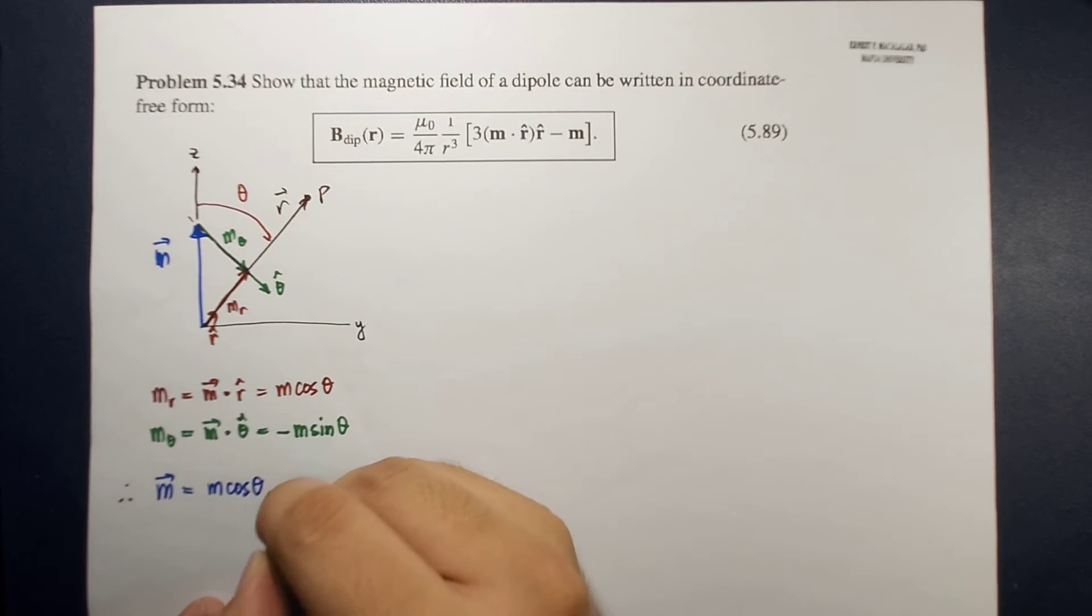So this is m_r, r hat minus m sine theta theta hat. Okay, so let's hold this for now.